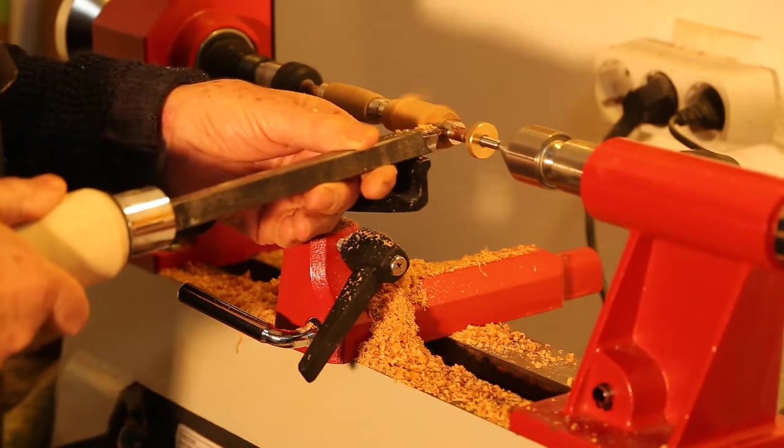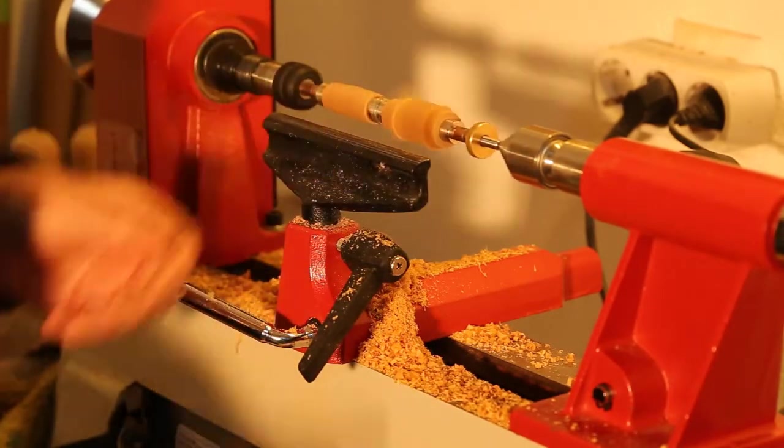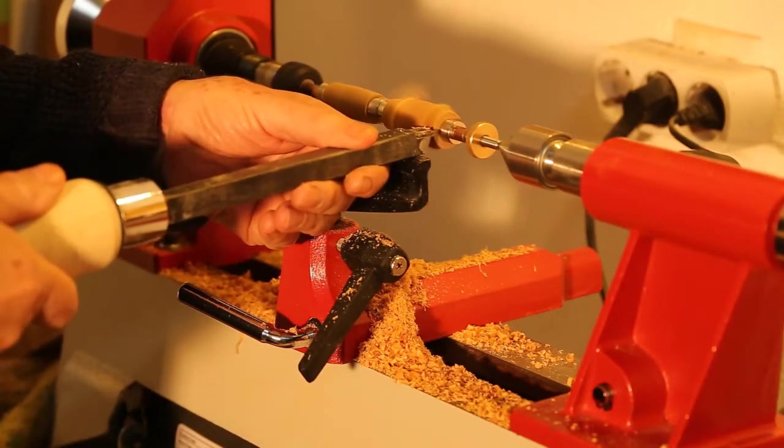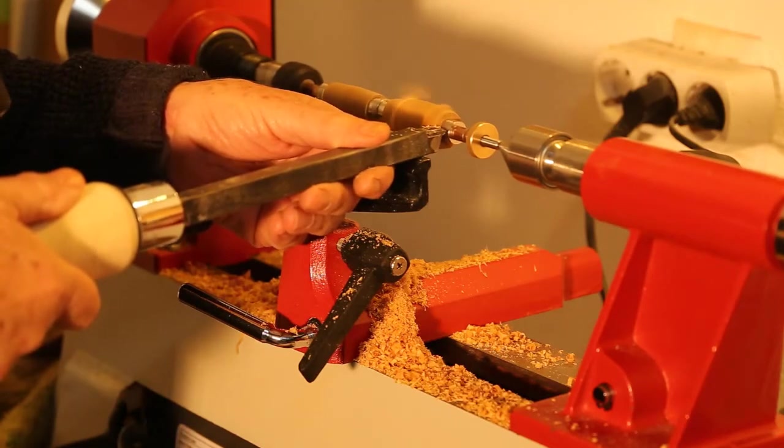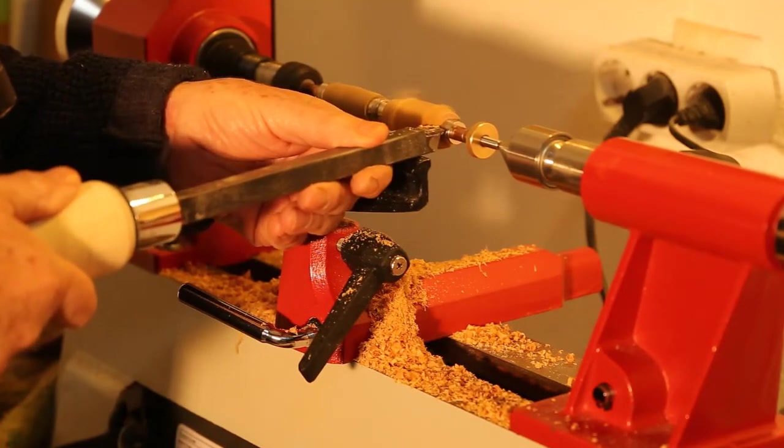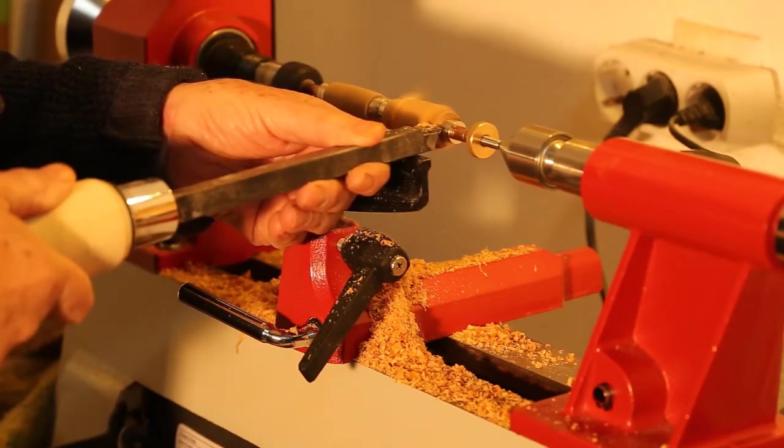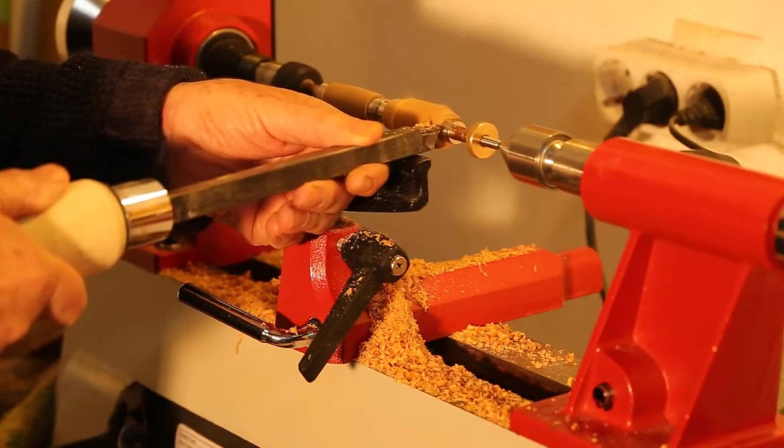This particular pen that I am making is called a Conway Stewart Churchill. It's called a Churchill because it was actually used by Churchill but it is also cigar shaped. So we spin it around. It's thicker in the middle. Not as thick as you can see in my hand, but we'll gradually get it to the right thickness.